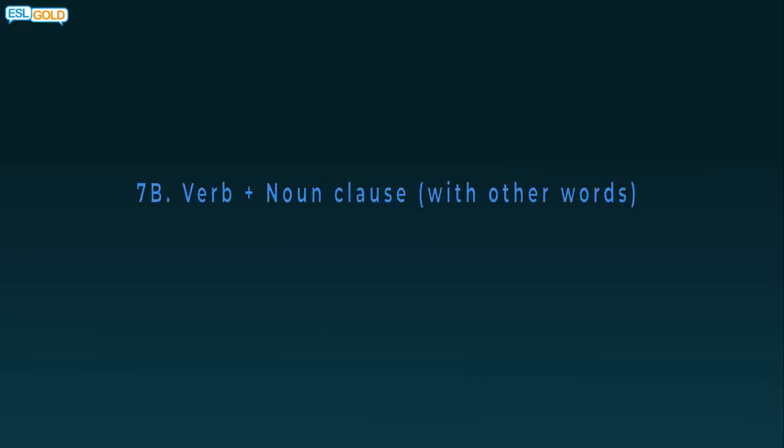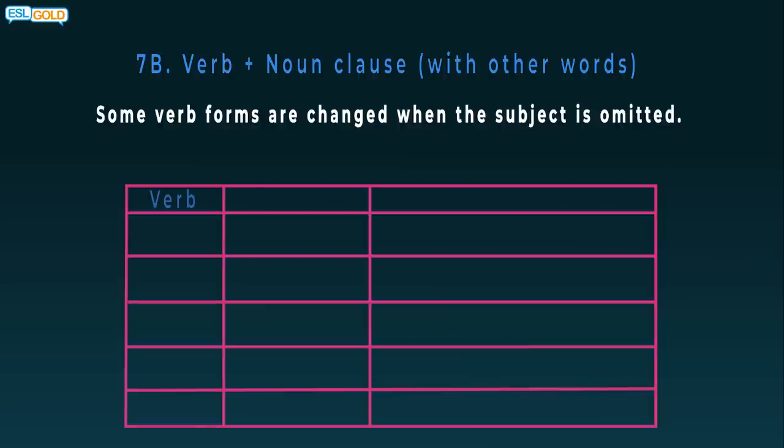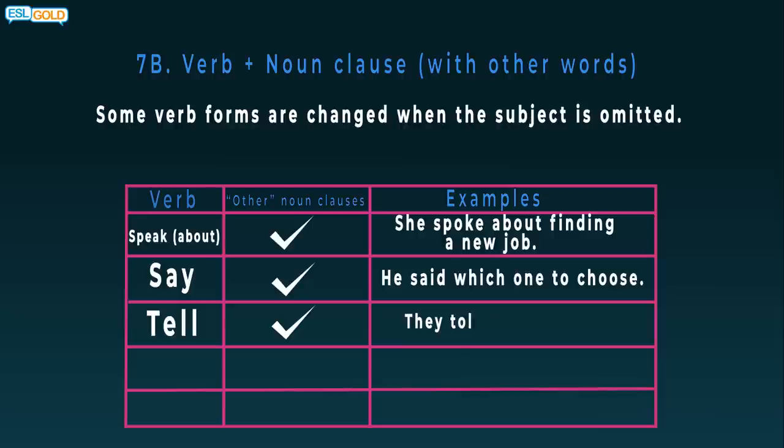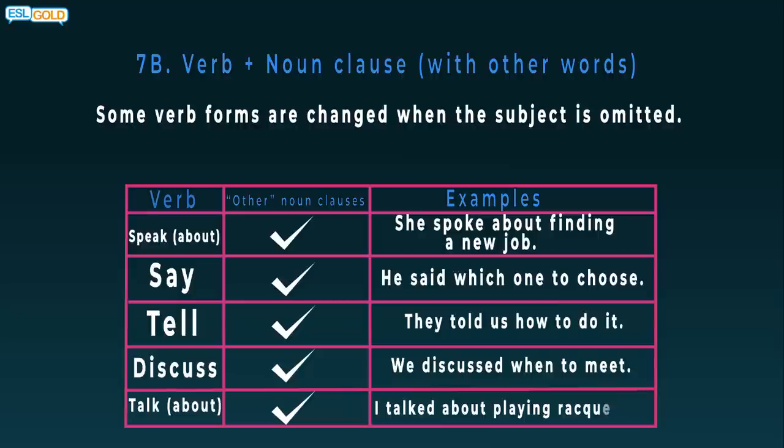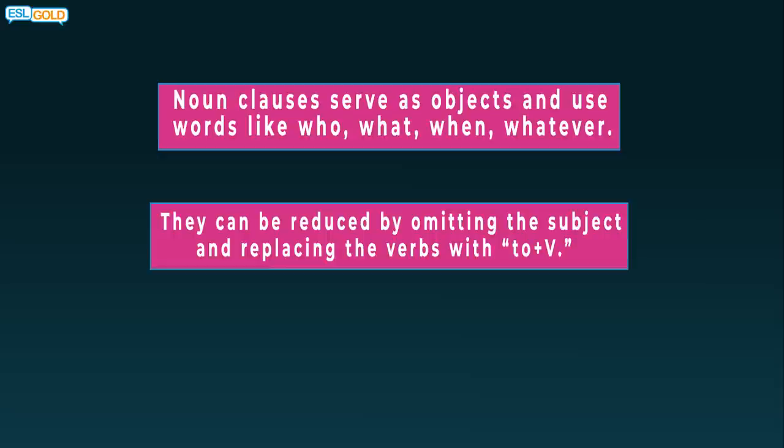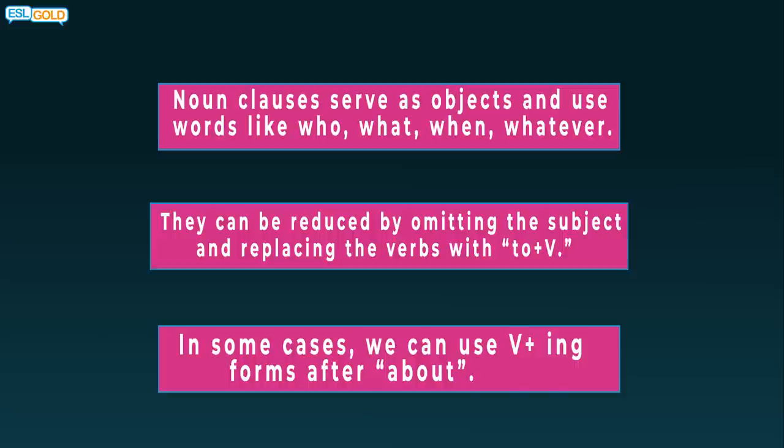7b. Verb plus noun clause with other words. Some verb forms are changed when the subject is omitted. Speak about: yes. She spoke about finding a new job. Say: yes. He said which one to choose. Tell: yes. They told us how to do it. Discuss: yes. We discussed when to meet. Talk about: yes. I talked about playing racquetball. Noun clauses serve as objects and use words like who, what, when, whatever. They can be reduced by omitting the subject and replacing the verbs with to plus verb, or in some cases, we can use verb plus ing forms after about.